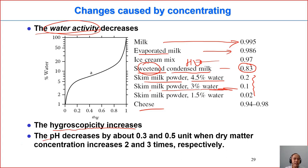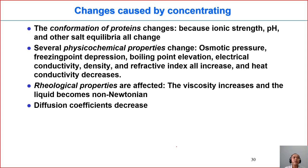The third effect is on the pH. When we do concentration, we will lower the pH — for example, about 0.3 to 0.5 units lower when we increase the solid content 2 or 3 times respectively by concentration. When we do concentration, we also cause changes in the conformation of proteins, because there are changes in ionic strength, in the pH value, in the salt equilibrium, and so on.